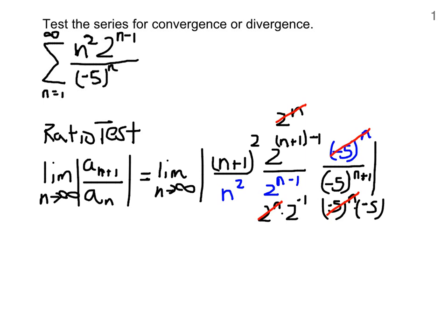We have to consider this n plus 1 quantity squared over n squared. As n goes to infinity, we recognize it as polynomial divided by another polynomial. The highest exponent in the numerator is 2, the highest exponent in the denominator is 2. With the variable going to infinity, we have the ratio of the coefficients. With both having 1 as their coefficients, this is just going to go to 1.